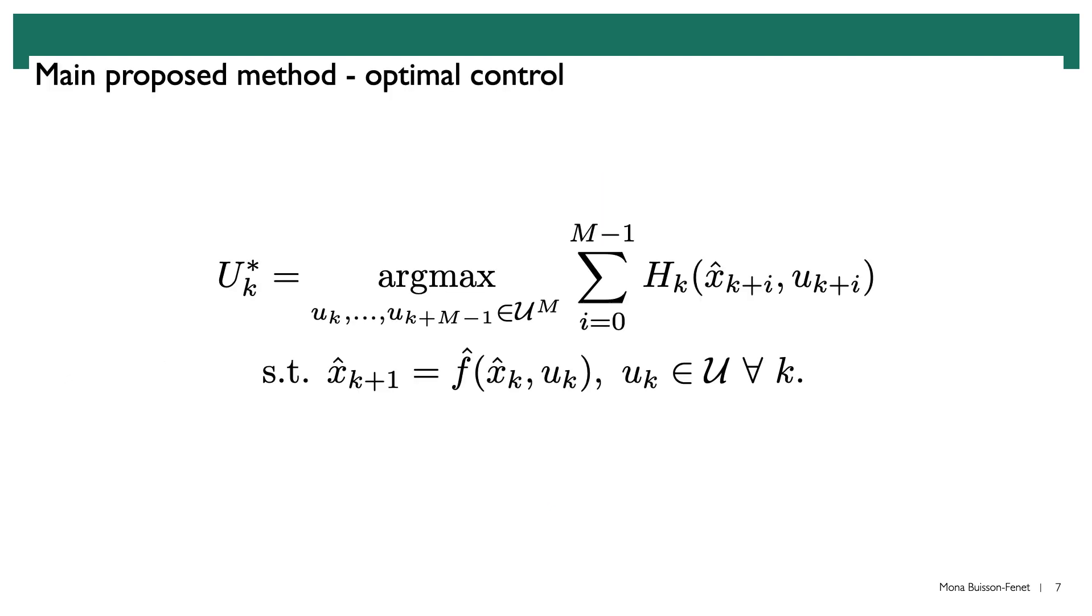We do that with a method based on optimal control. We have an information criterion H, which incorporates the uncertainty prediction from the Gaussian process model, a fixed time horizon, and we take the current estimate of the dynamics as a constraint, which means we are looking for a feasible solution according to the current dynamics model.